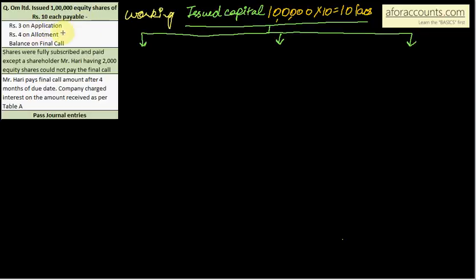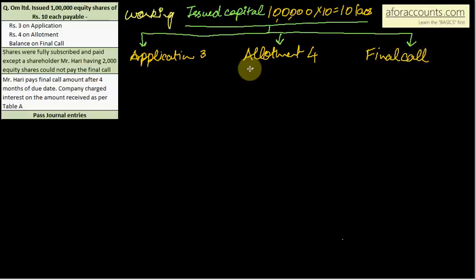Payable as under application, allotment and final call. So application 3 rupees, allotment 4 rupees, final call balance. So 7 ho tha hai, 10 minus 7, 3 rupees will be your final call.